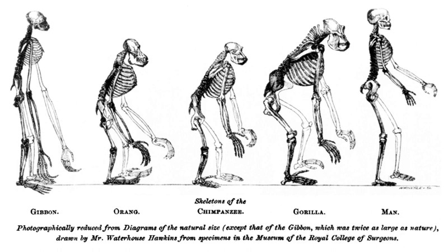The frontispiece is a diagram of ape skeletons, photographically reproduced after drawings by Waterhouse Hawkins from specimens in the Museum of the Royal College of Surgeons. The title page bears Williams and Norgate's medallion logo; the date is 1863.